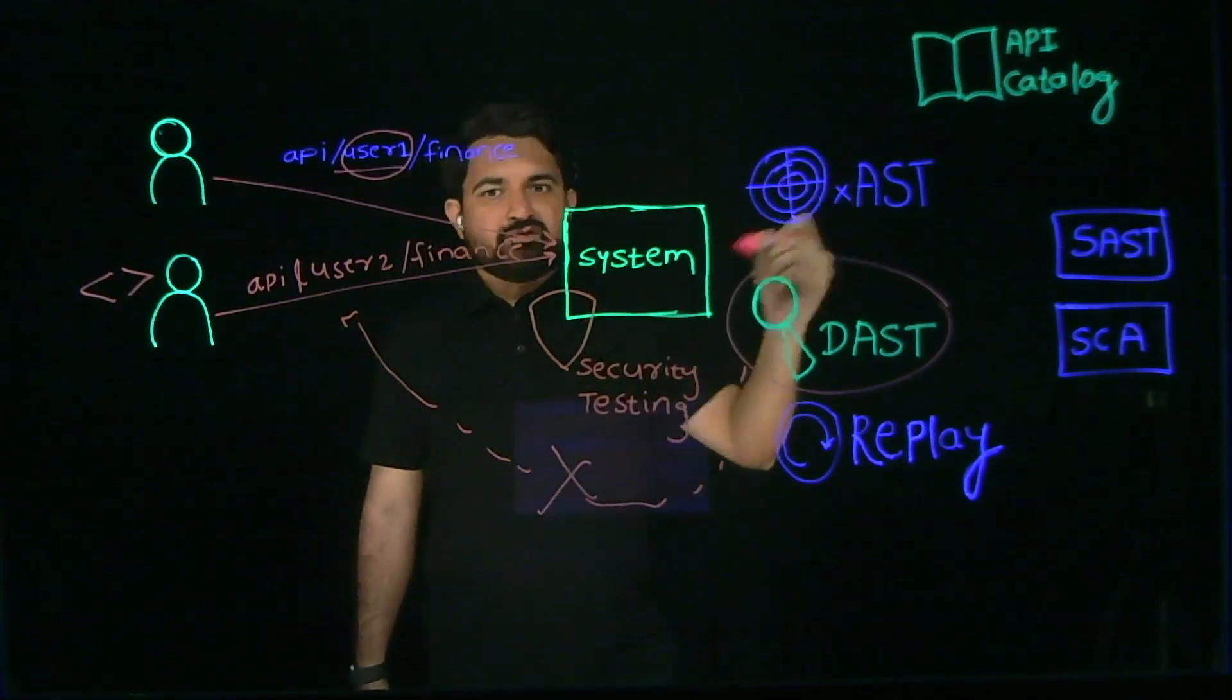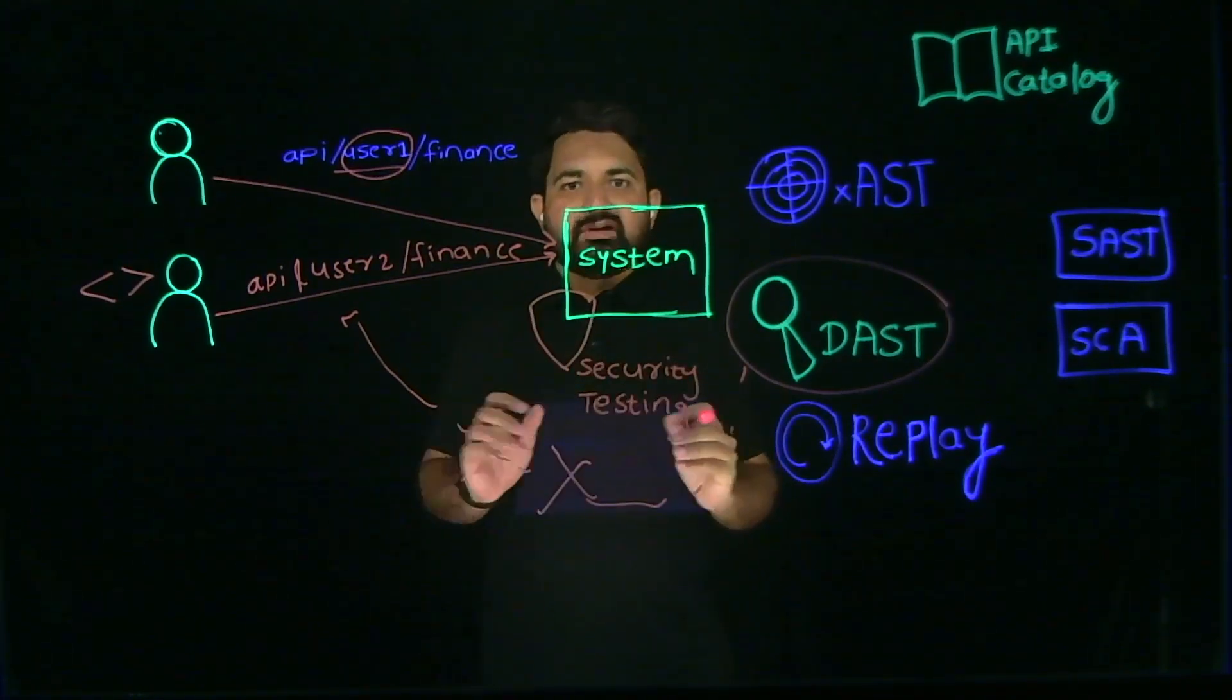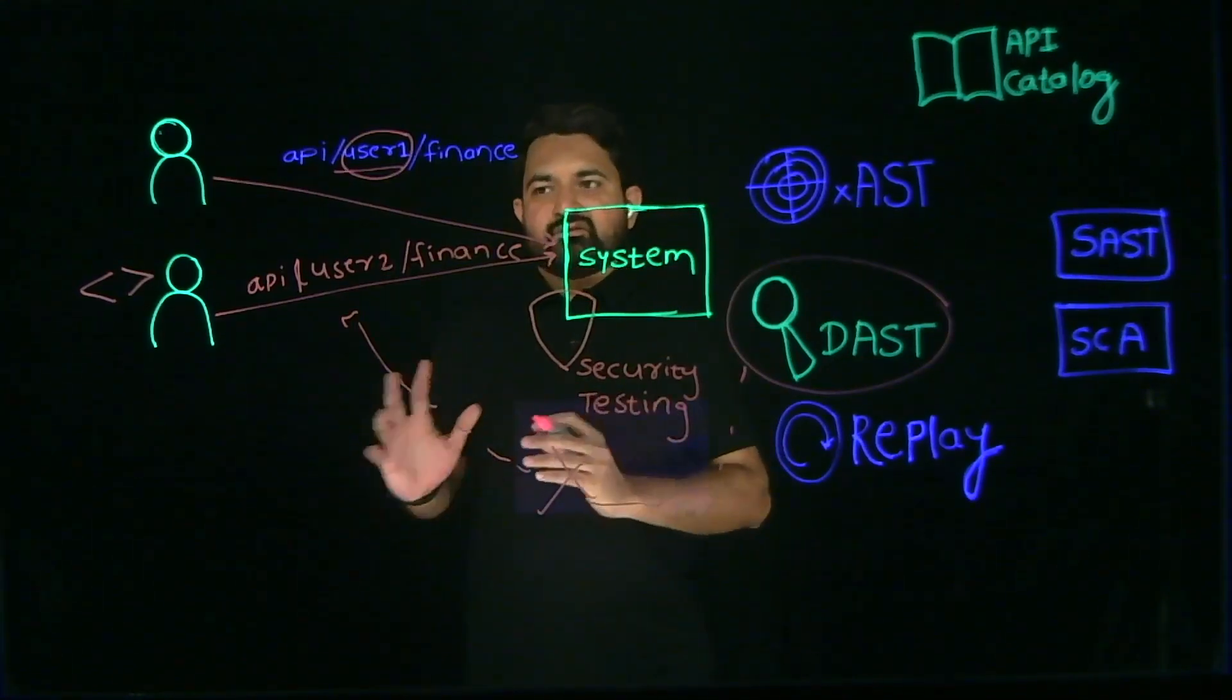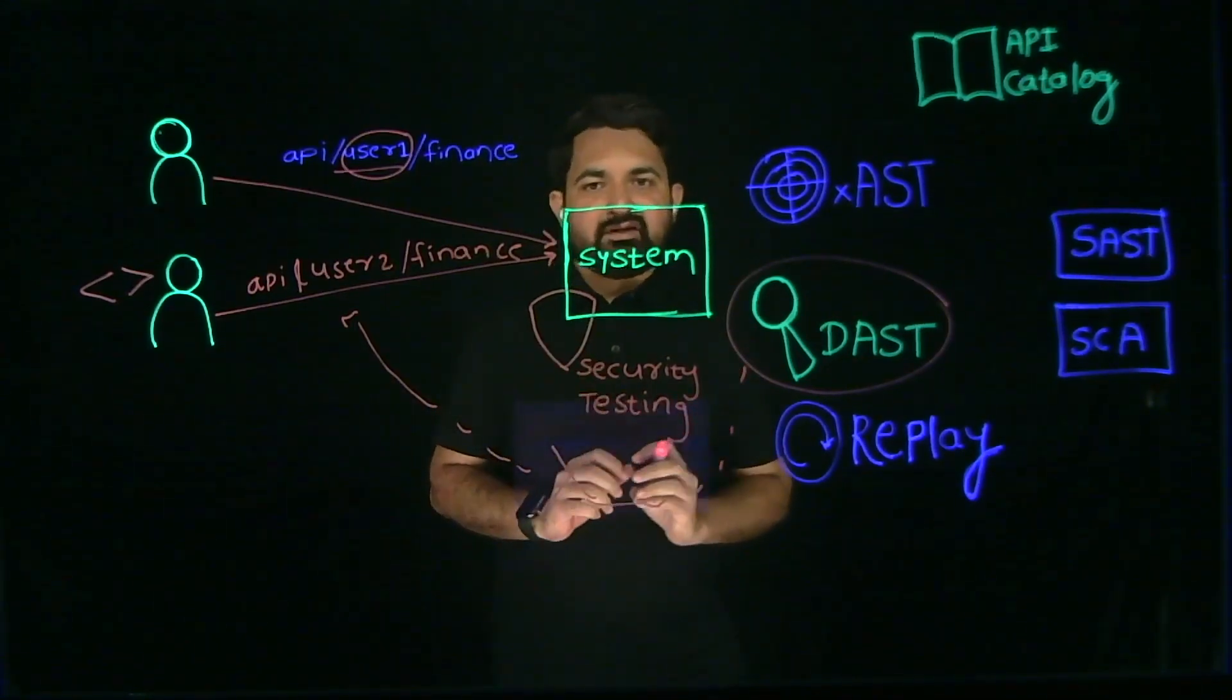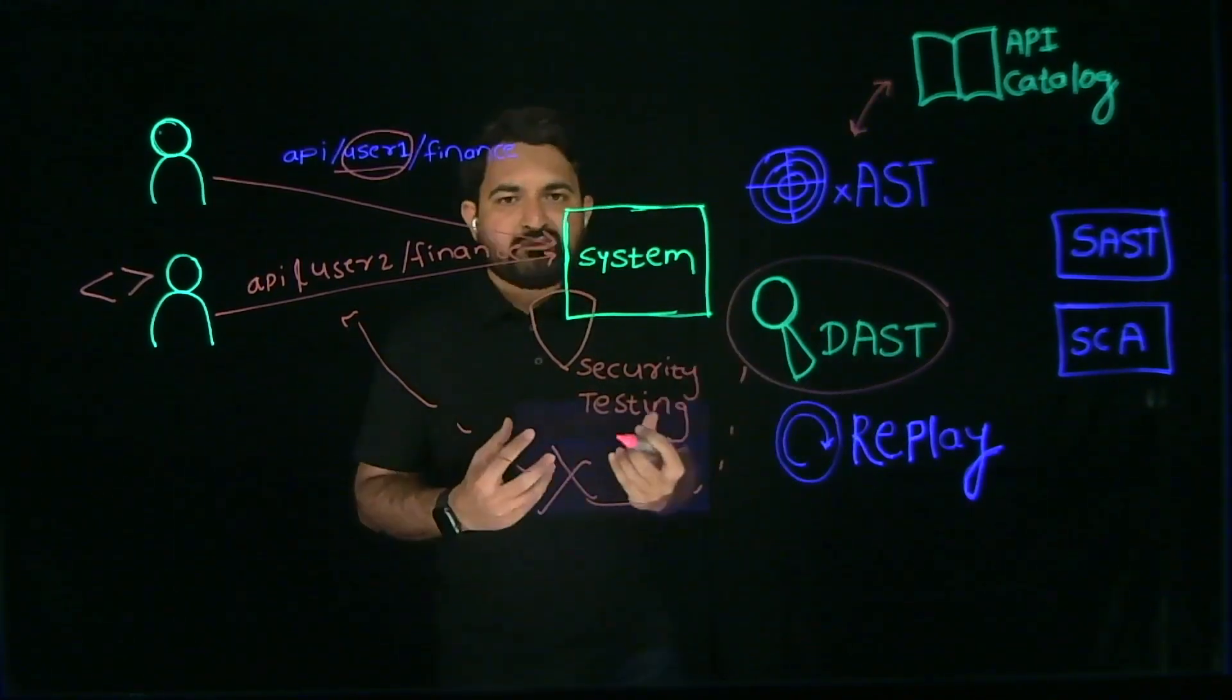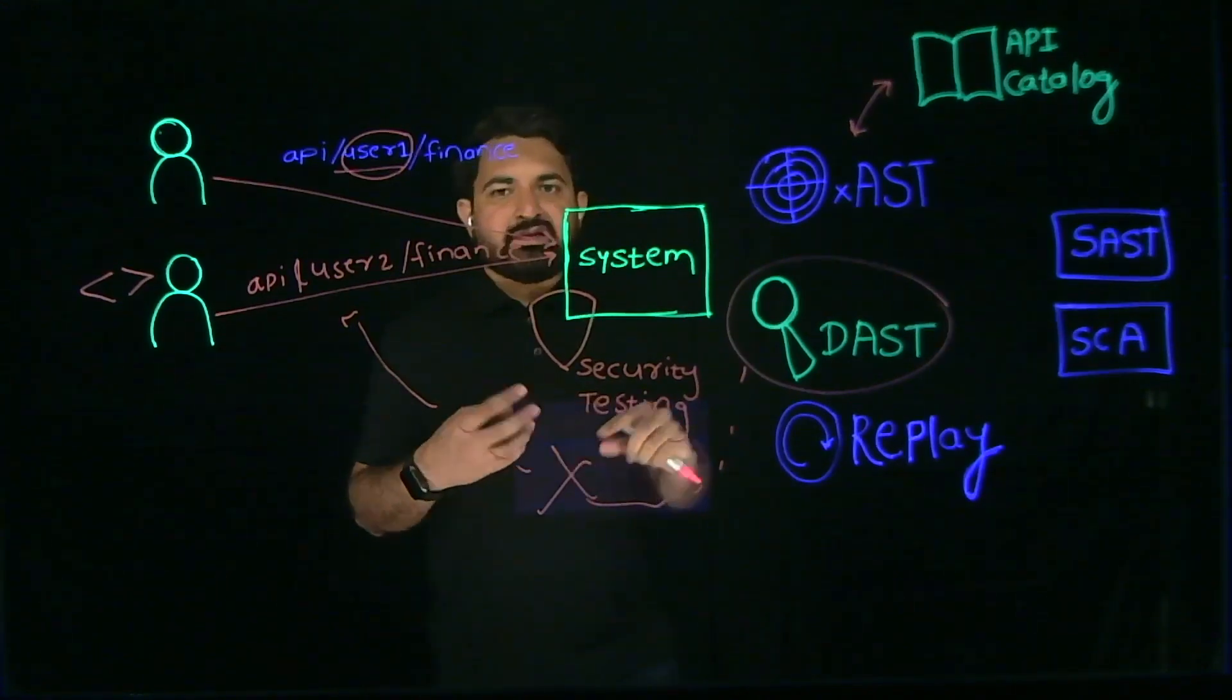But that's where Traceable comes into the picture. Traceable XAST uses live traffic with all the authorization credentials and parameters. It can detect different sets of vulnerabilities using that live traffic itself. It leverages API catalog which has a lot of information around the APIs like behaviors, relationships, and API interactions.